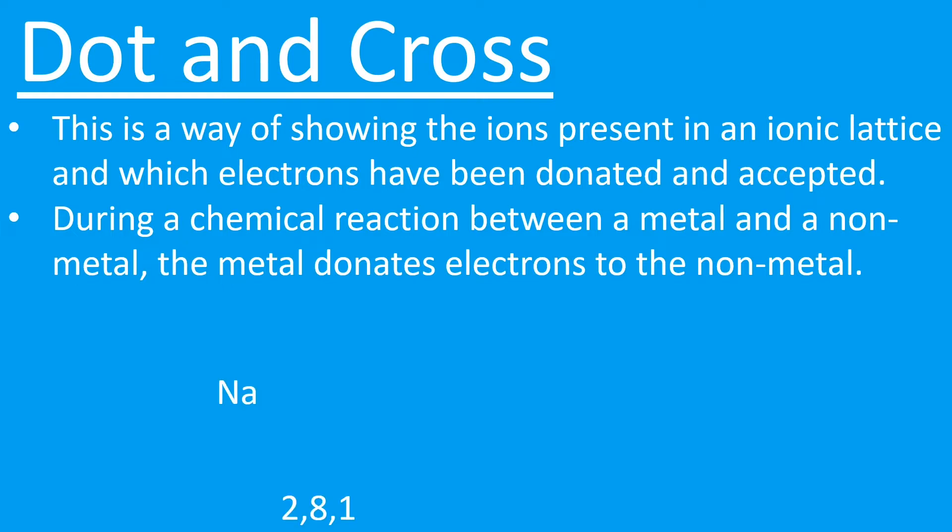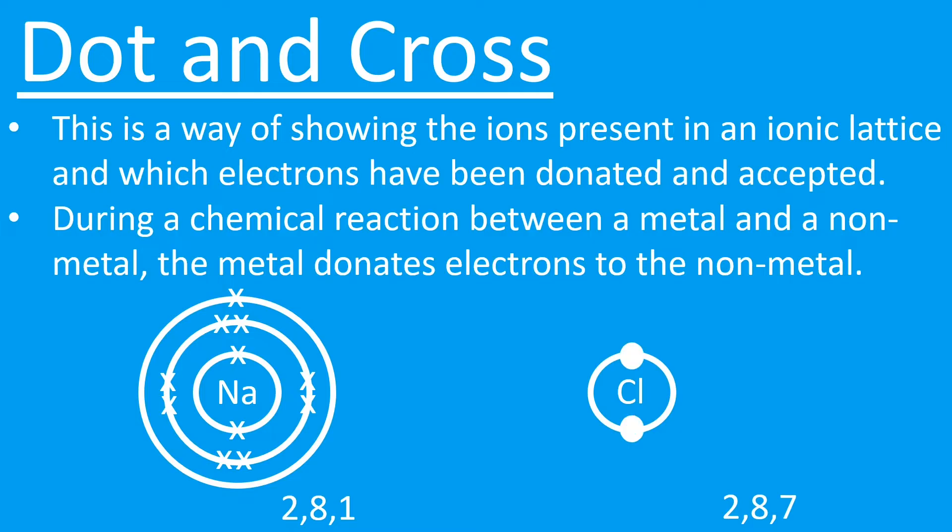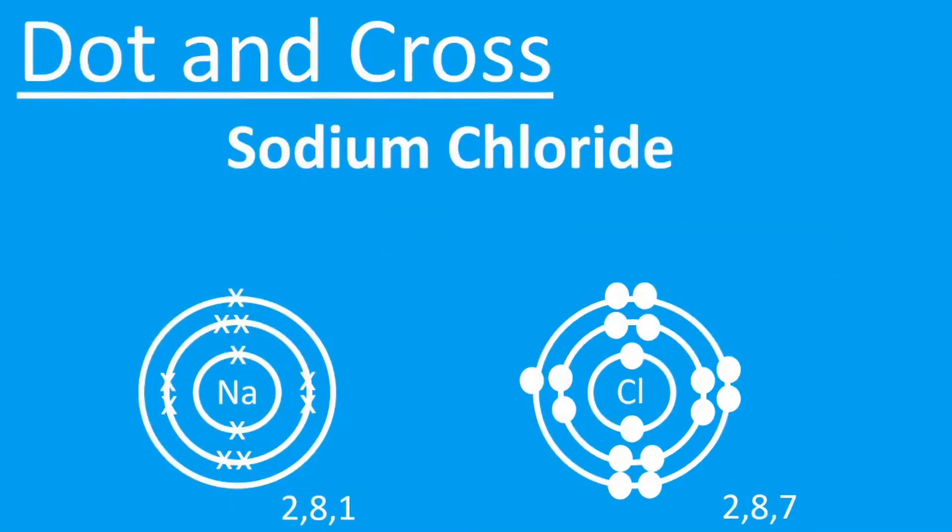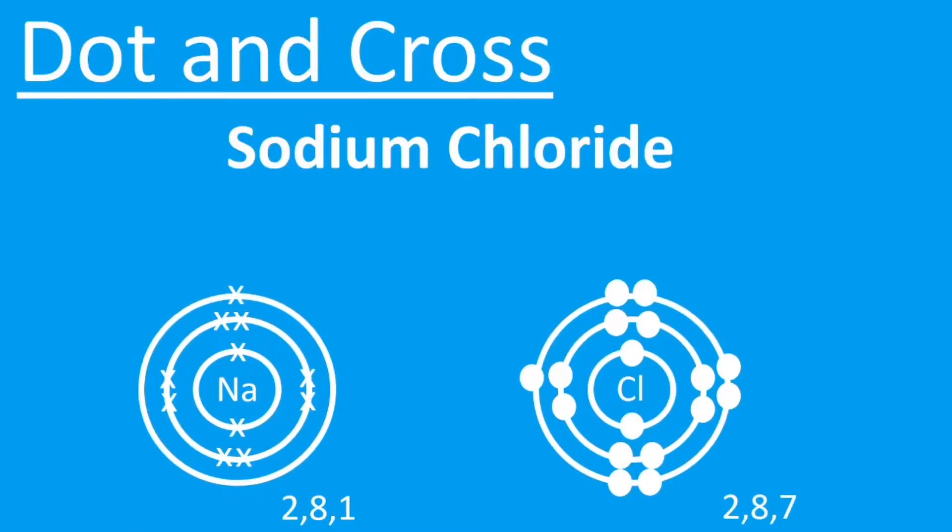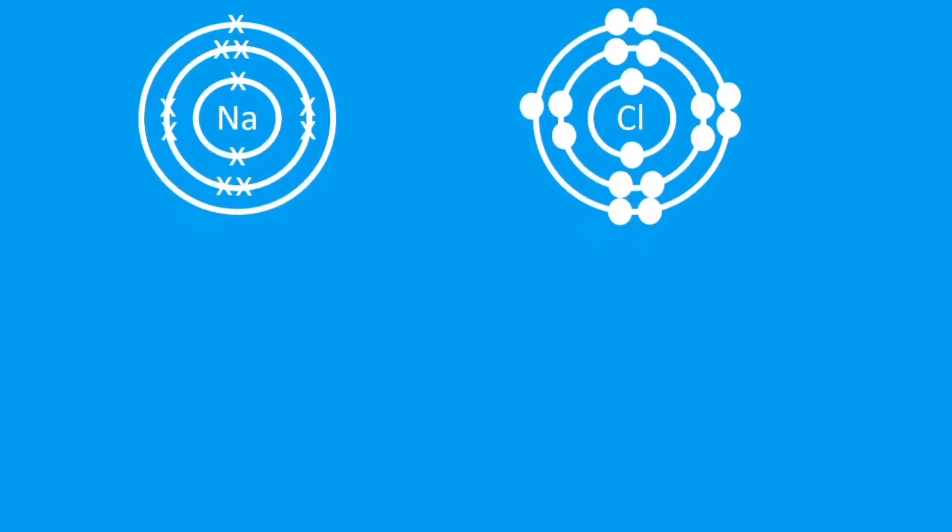For example, sodium is a group 1 metal with the electron configuration 2,8,1. Chlorine is a group 7 non-metal with the electron configuration 2,8,7. So what we're going to see here is sodium donating its outer electron to chlorine.